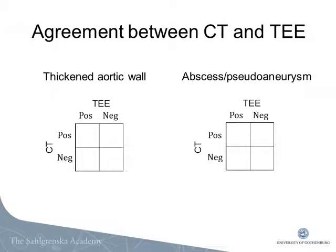A thickened aortic wall was found with both CT and TEE in 17 patients, and both exams were negative in eight patients. CT detected a thickened wall in an additional two patients not detected with TEE.